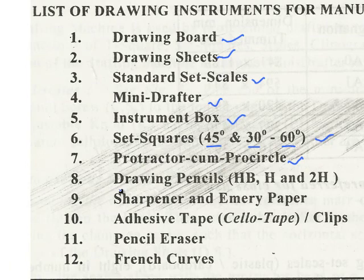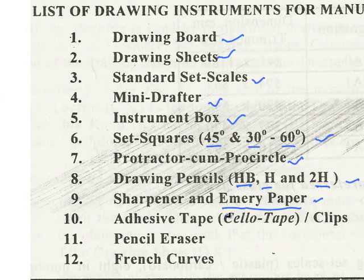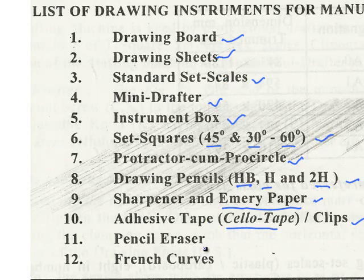Drawing pencils — there are different types of drawing pencils like HB, H and 2H. Sharpener and emery paper; emery paper is a paper which is coated with sand or emery. Adhesive tape like cello tape or clips to hold the drawing sheet to the drawing board, pencil eraser, and French curves.